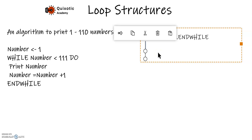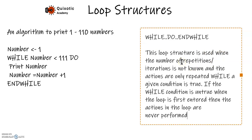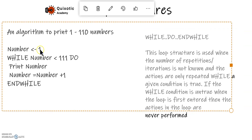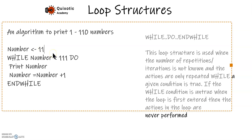The WHILE loop is used when the number of iterations is not known but you know the condition. The key difference from REPEAT...UNTIL is that the condition is checked at the beginning — before any action is performed. If the condition is false when the loop is first entered, the actions inside the loop are never performed at all.